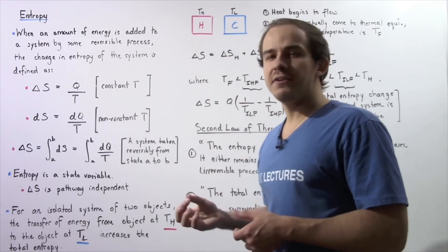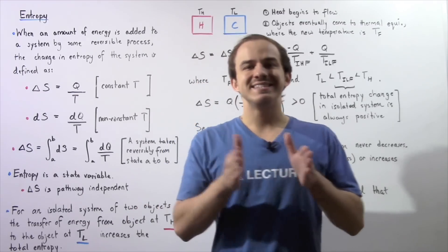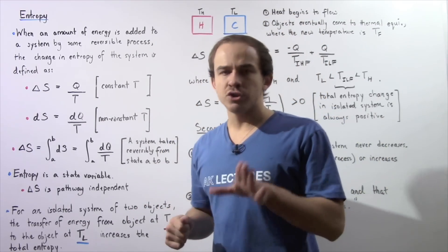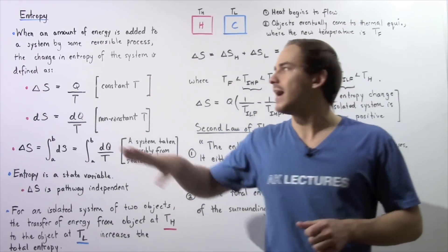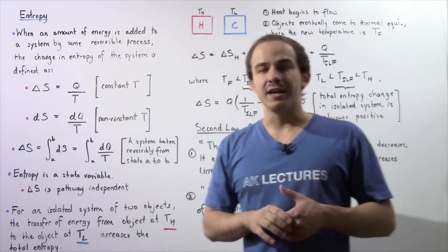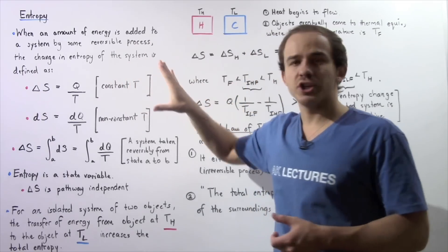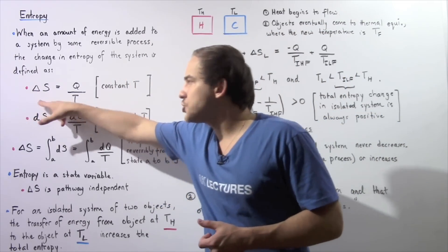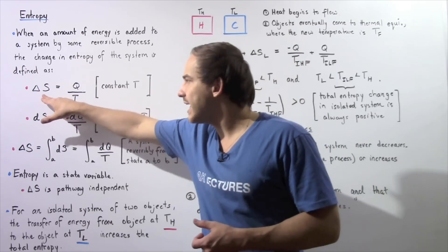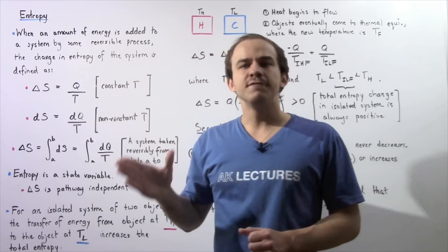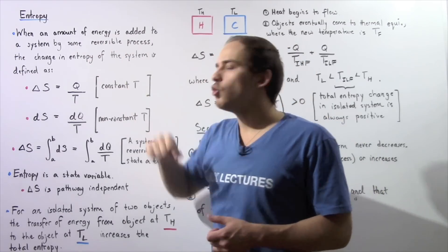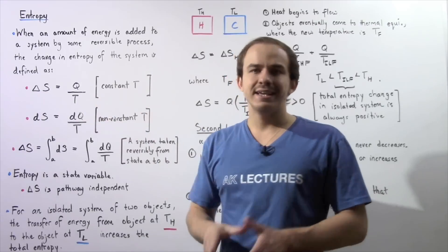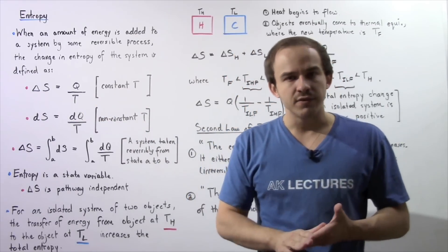When an amount of energy is added into a system by a reversible process, the change in entropy of that system is defined in the following way. If our temperature is assumed to be constant during that process, then the change in entropy given by delta S is equal to Q divided by T, where Q is the energy that flows into our system and T is the temperature given in Kelvins.